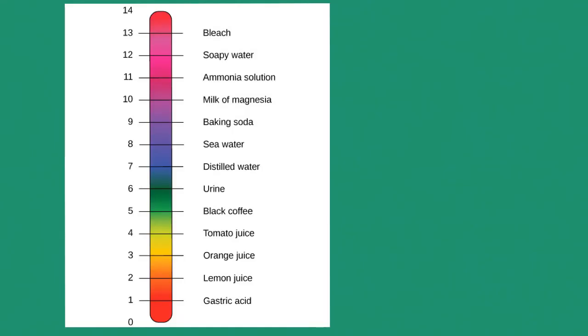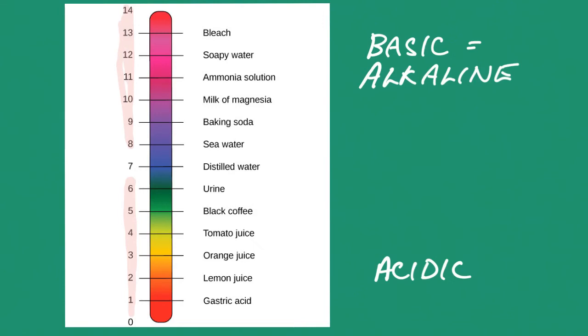You may have heard of the word acidic or basic. Another word for basic is also alkaline. What does this mean? Let's take a look at the pH scale. When we look at the pH scale, anything that's below 7 is acidic. Anything that's above 7 is basic. And 7 is neutral. Distilled water is neutral, or pure water is neutral.